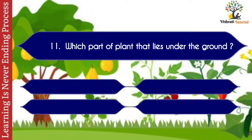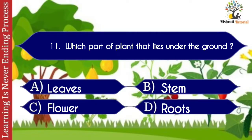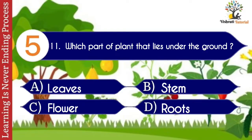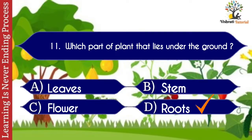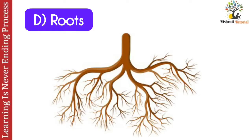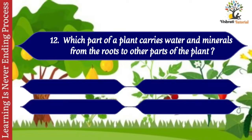Question number eleven: which part of a plant lies under the ground? Options: A. Leaves, B. Stem, C. Flower, D. Roots. The correct answer is D. Roots. Roots is the part of a plant that lies under the ground.